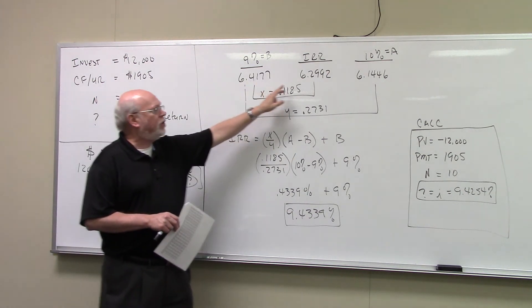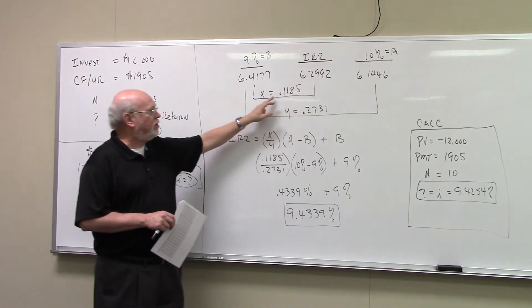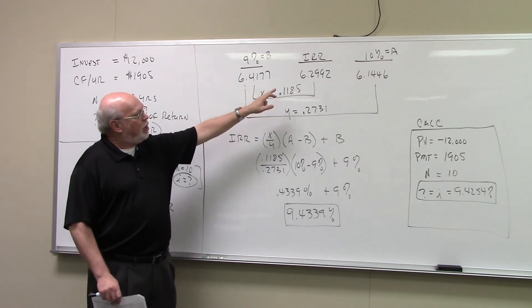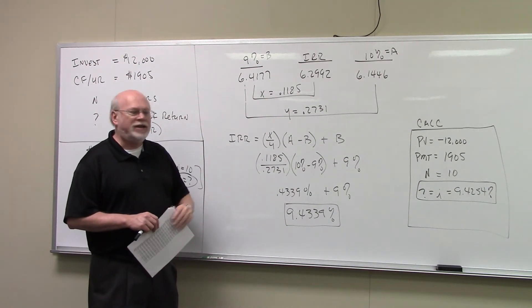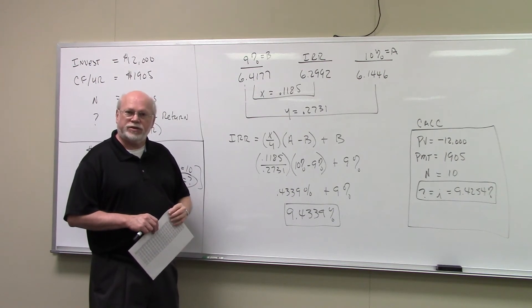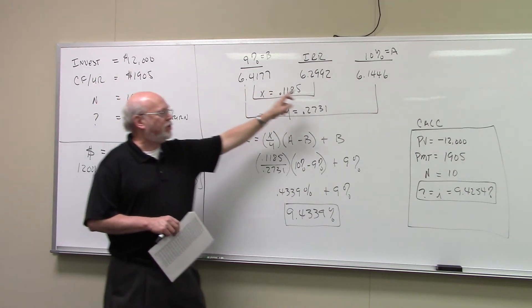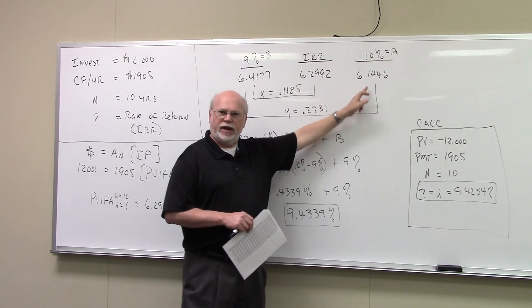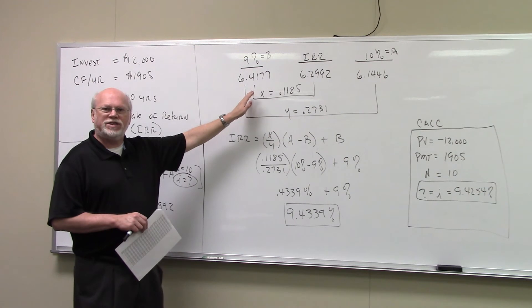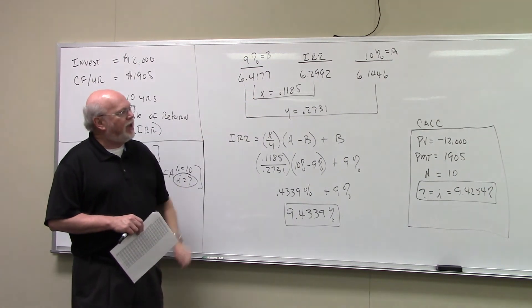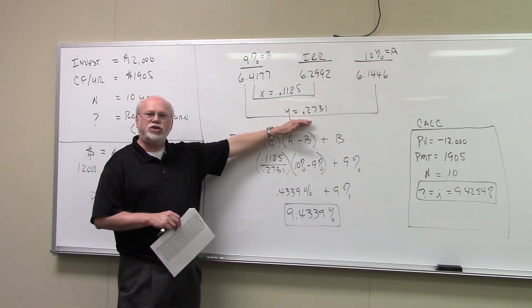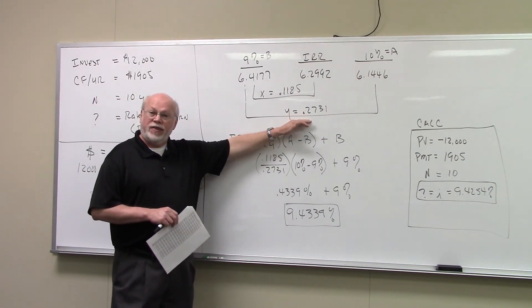This interest factor minus this interest factor is going to be X. So 6.4177 minus 6.2992 is 0.1185. That's X. Y is going to be this interest factor minus this interest factor. So to calculate Y, you would take 6.4177 and subtract 6.1446 and that gives you 0.2731. That's Y.